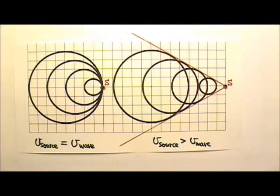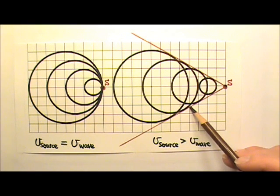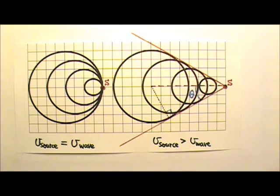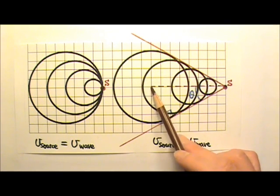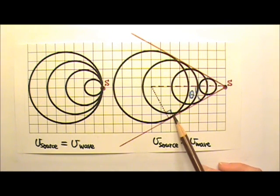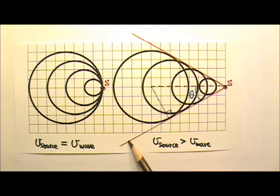In fact, we can find how fast the supersonic aircraft travel from the angle of the cone. Let's see. This is the angle of the cone, not the full angle, but the angle from the cone to the center of the cone. I can make a right triangle here. This is a 90-degree angle because the radius is always perpendicular to the tangent line.